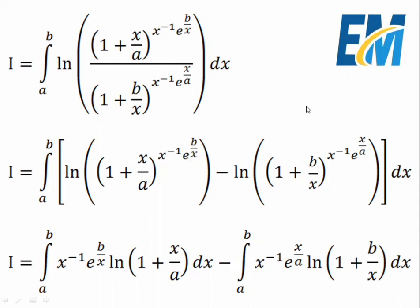We know that ln of x^alpha equals alpha times ln x, so we can put the power in front of the ln. So i equals the integral from a to b of (x^(-1) times e^(b/x)) multiplied by ln(1 + x/a) dx, minus similarly for the second term, all multiplied by ln(1 + b/x) dx.